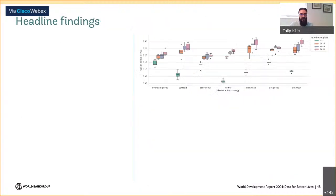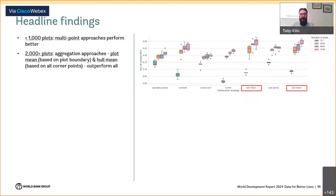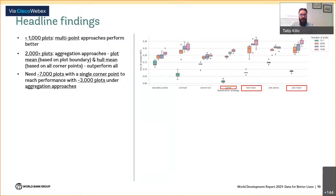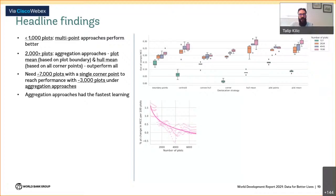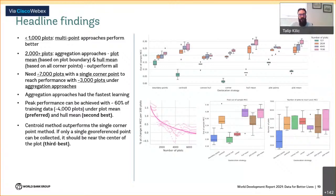Here's a quick overview of our findings. With fewer than 1,000 plots, multi-point approaches perform better, but starting with at least 2,000 plots, aggregation approaches that rely on collection of plot boundaries outperform all available approaches in terms of accuracy metrics. We document that we need about 7,000 plots with a single corner point to reach the performance of 3,000 plots under the more preferred approaches, which also had the fastest degree of learning — the steepest decline in additional accuracy gained by increasing training data volume. Peak performance can be achieved by roughly 60 percent of training data under preferred approaches.